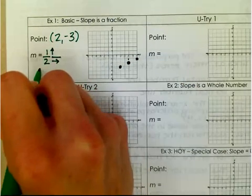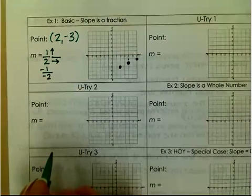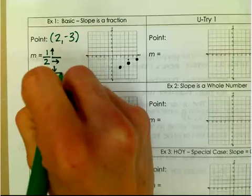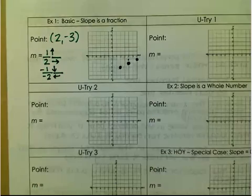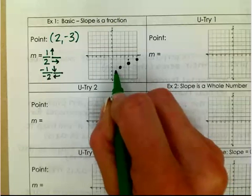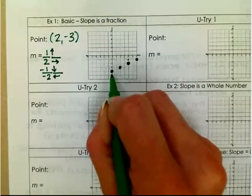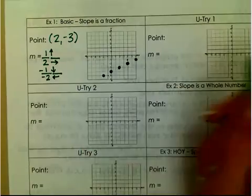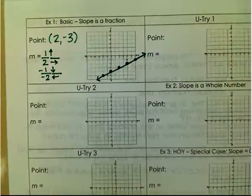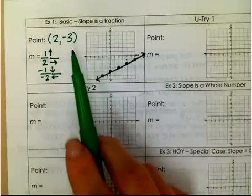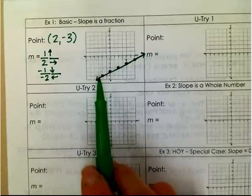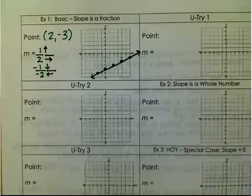This is the same thing as negative 1 over negative 2, so I can also go down 1 and left 2 to get my next point. Starting at (2, −3), I can go down 1 and left 2. When I connect all of those points I have a line. So: plot the point, use slope as rise over run to get to the next point, and then connect your points with a line.